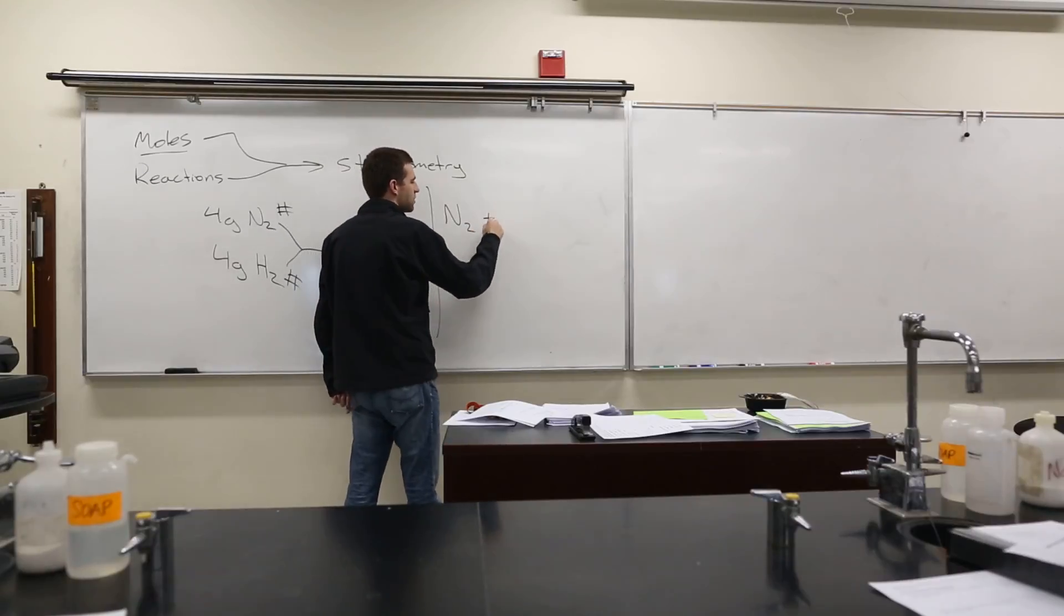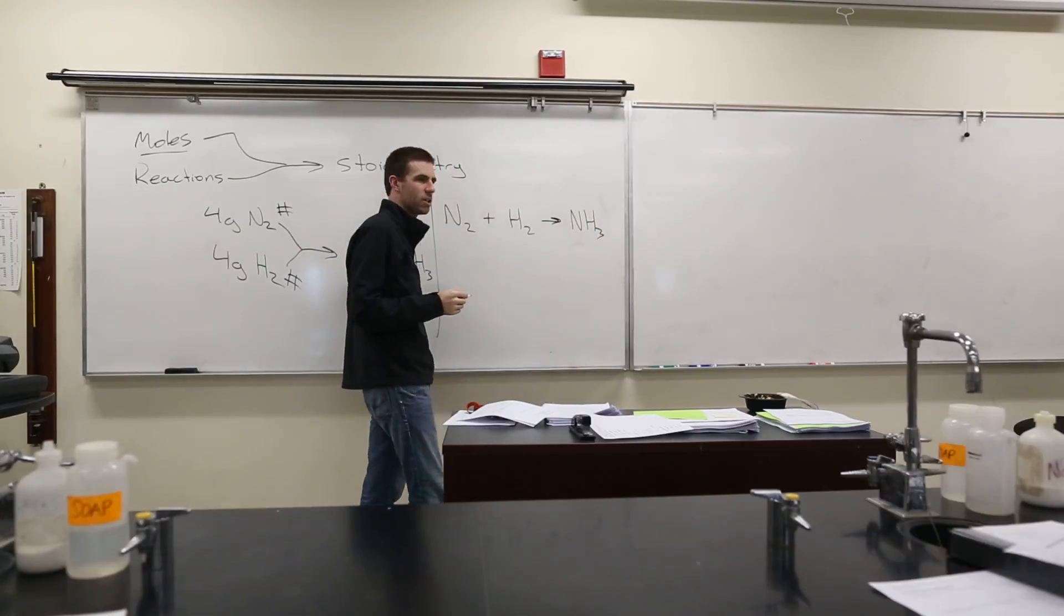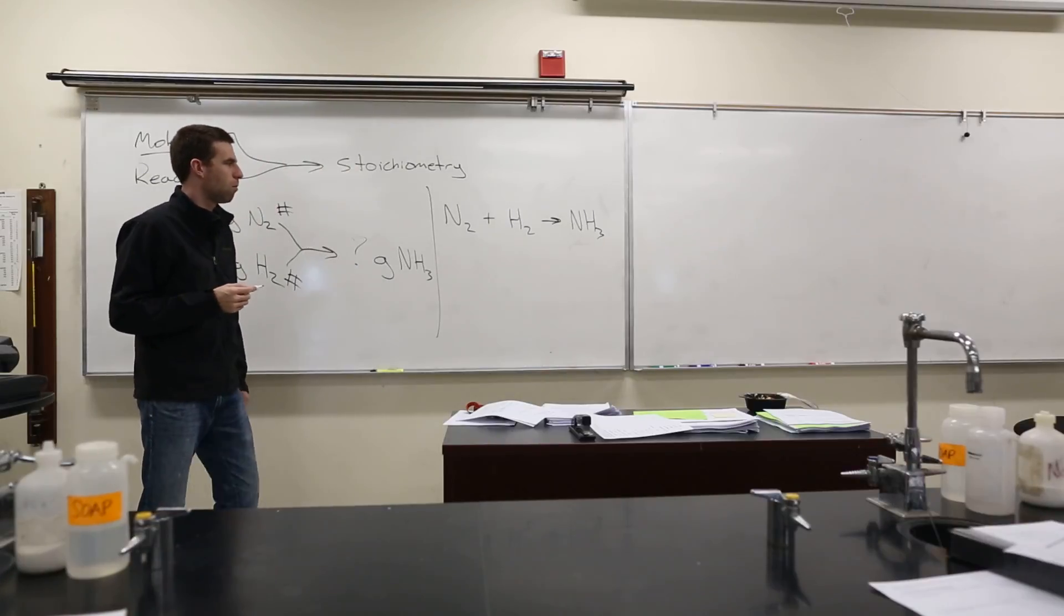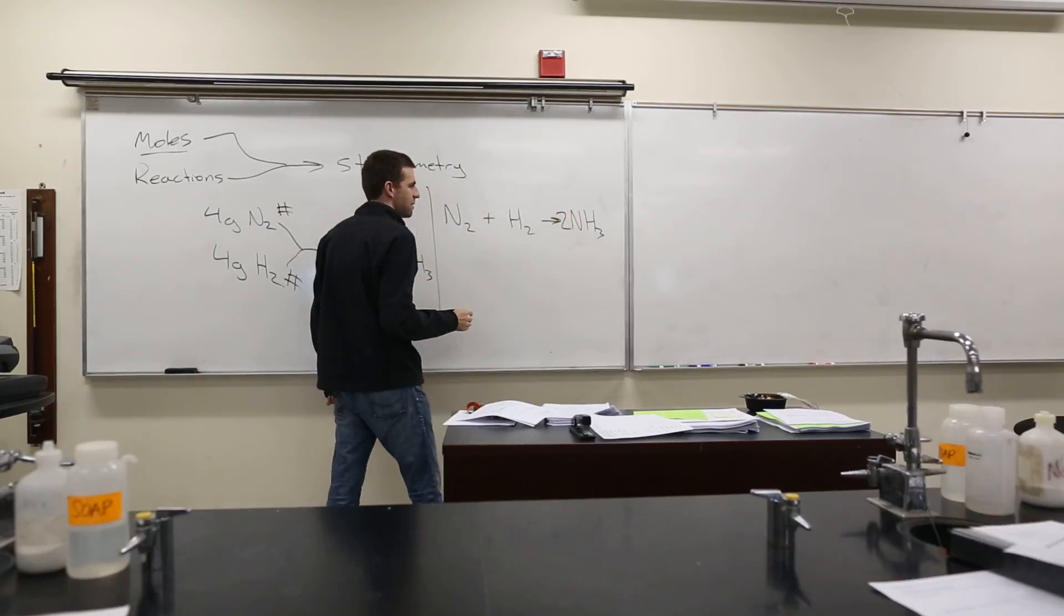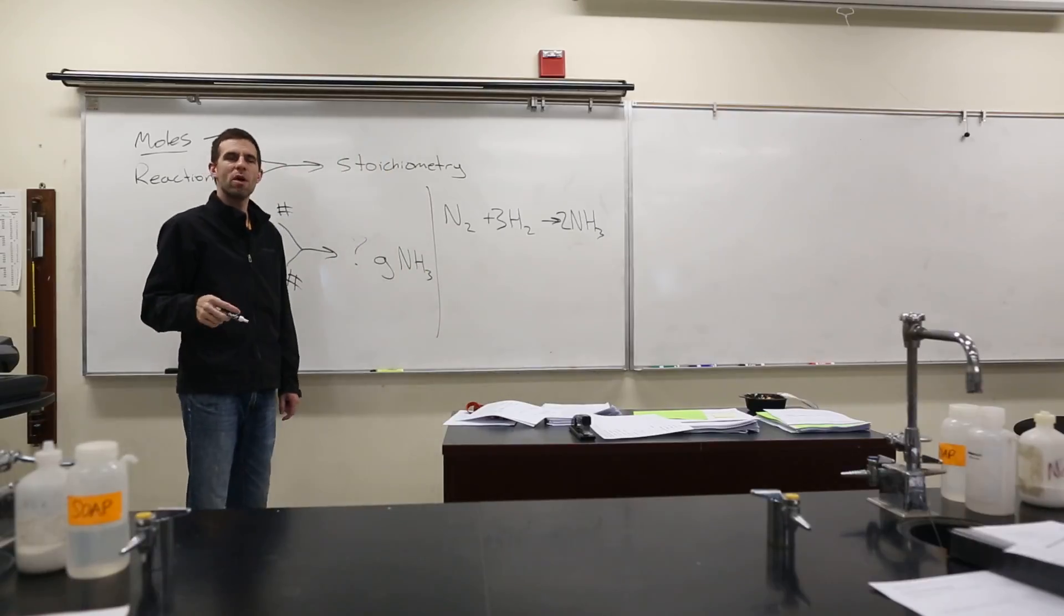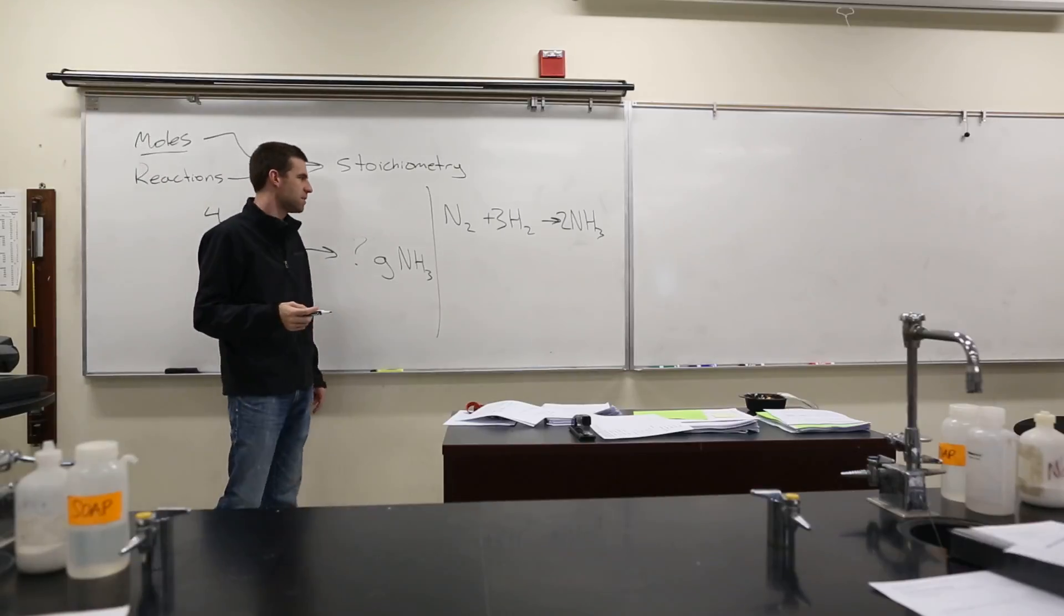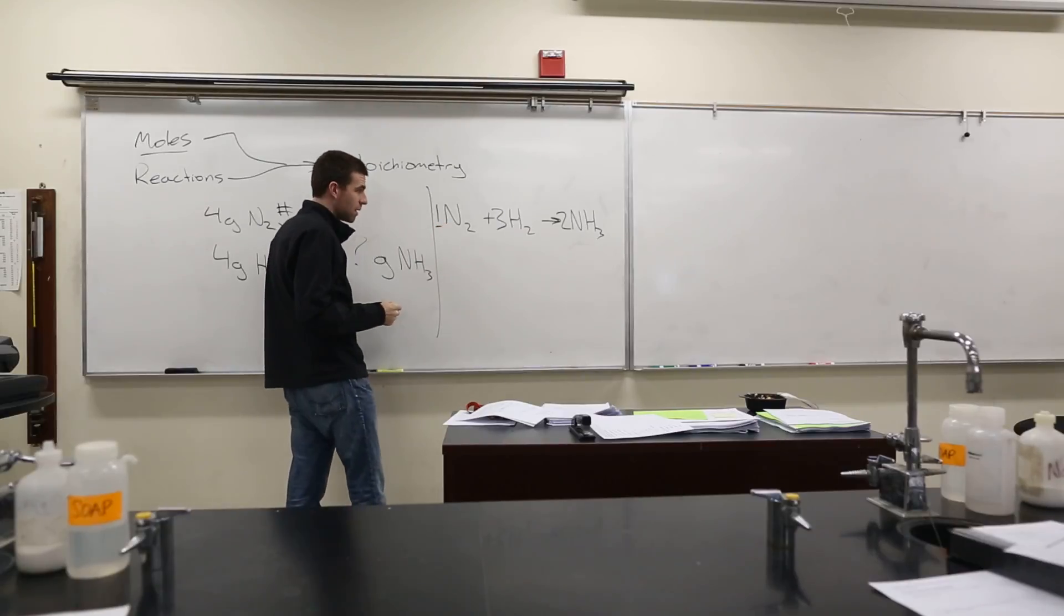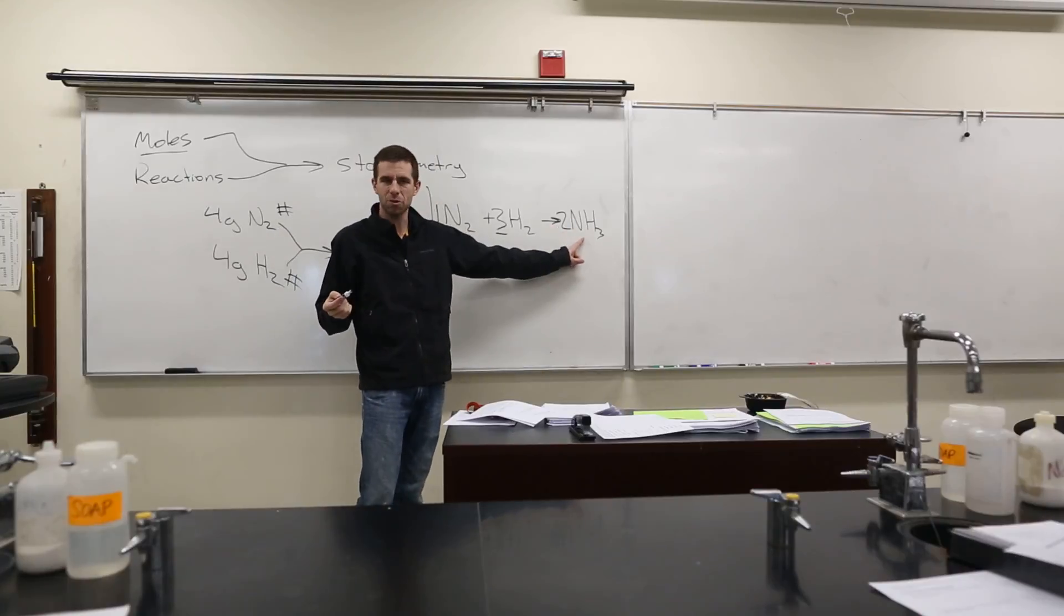And we've actually looked at this one in class too. So if you looked at this reaction, which we called the Haber process, is it balanced? No it's not, right? So I have two Ns, I need two Ns. Now I have six Hs, so I do that to get six Hs. What does this mean, this balanced reaction? It means that if I have one N2 and three H2s, I will get two NH3s. You guys understand?